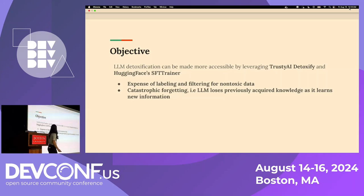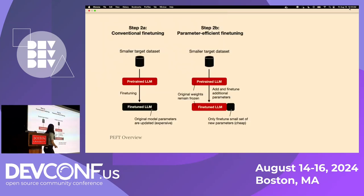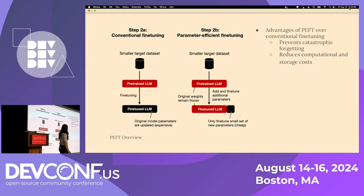Now that we've dealt with the expense of labeling and filtering for non-toxic data, we have to address catastrophic forgetting — when an LLM forgets previously acquired knowledge as it learns new information — and we can do this via a technique called parameter efficient fine-tuning, or PEFT. In contrast to conventional fine-tuning where we update all of the parameters in the original model, with PEFT we freeze them instead and simply add and fine-tune a small set of additional parameters. This prevents catastrophic forgetting and reduces computational and storage costs.